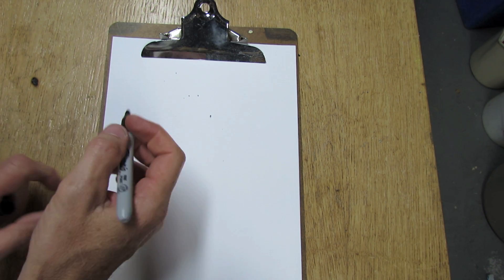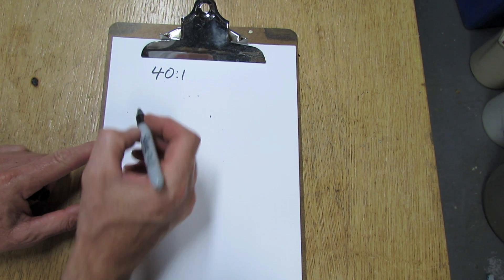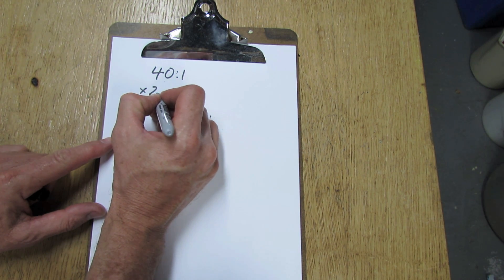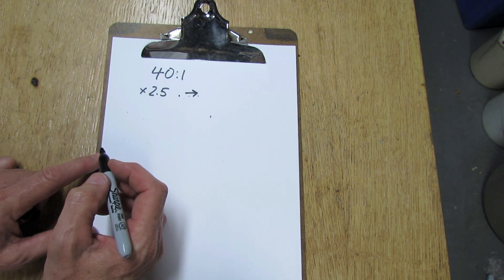Let me show you the fast and easy way to get a 40 to 1 fuel to oil ratio. All we're going to do is multiply it by 2.5 and then take the decimal point and move it over one spot.